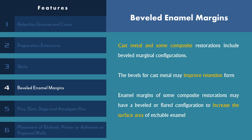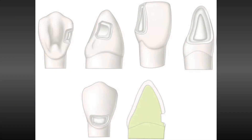The beveled enamel margin is another secondary feature. For cast metal restorations, beveling the enamel margin enhances retention. For composite restorations, beveling provides more enamel surface available for etching and bonding, which automatically enhances retention. In the picture, we can see that the enamel margins are all beveled. Once the total surface area is increased, there is more retention. So for composite and cast metal restorations, beveling the enamel margin acts as a secondary resistance and retention feature.